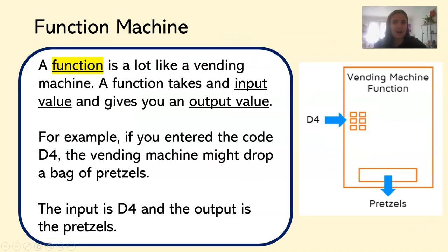This is a lot like how a function works. A function is a lot like a vending machine. A function takes an input value, so usually a number, and gives you an output value. For example, if you entered the code D4 on a vending machine, a bag of pretzels might drop out. So the input is D4, the output is pretzels.